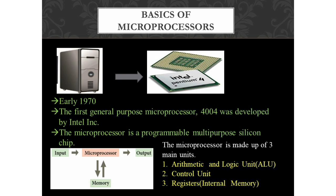The microprocessor is a programmable multipurpose silicon chip. It is driven by a clock pulse. It accepts input as binary data and, after processing, provides output data as per the instructions stored in memory. Looking at the block diagram: input goes into the microprocessor, which produces output, with memory connected. The microprocessor accepts binary input, processes it, delivers output, and results are stored in memory. It can also fetch instructions from memory, process them, and store results back in memory.